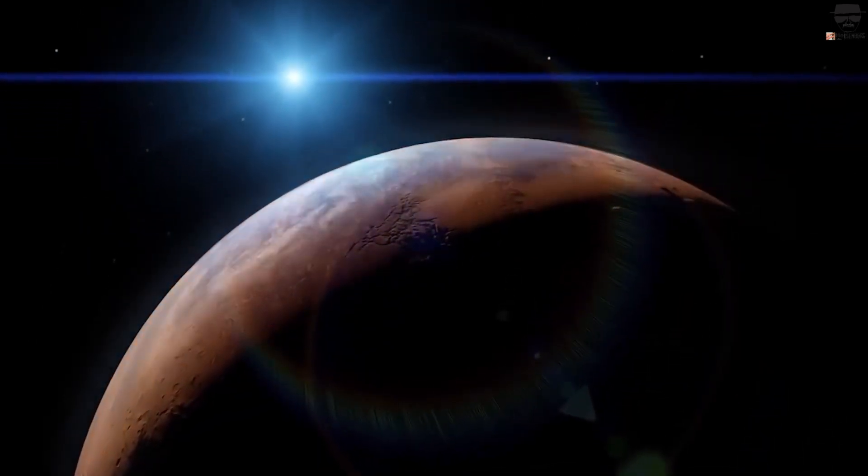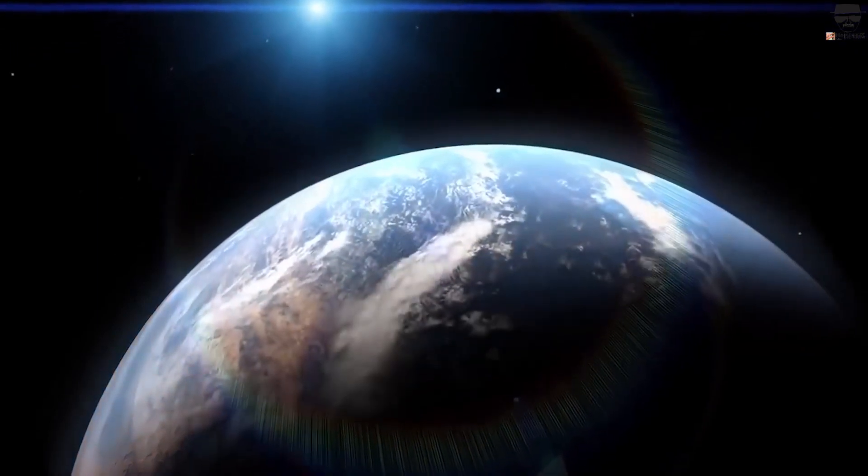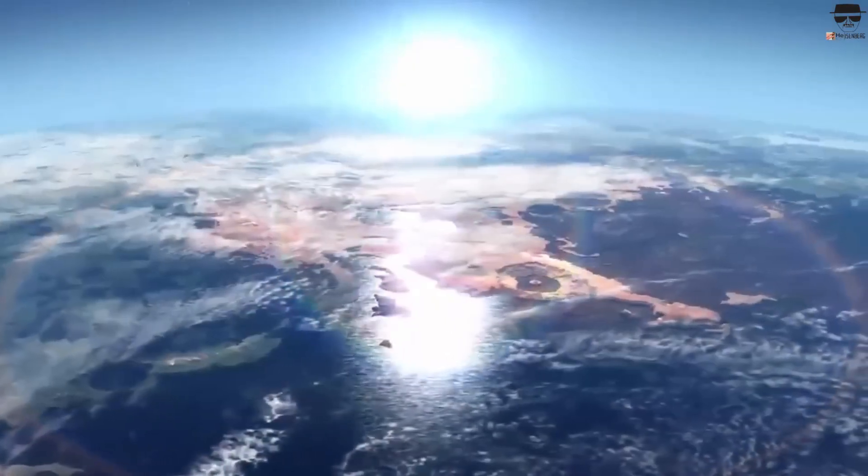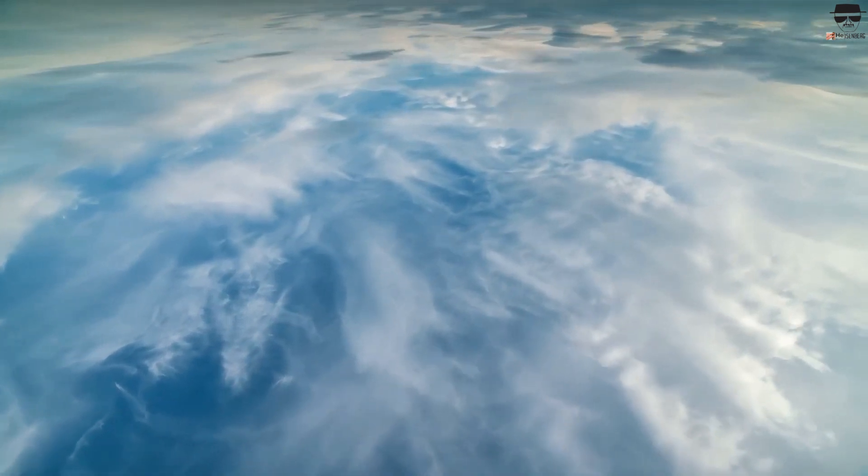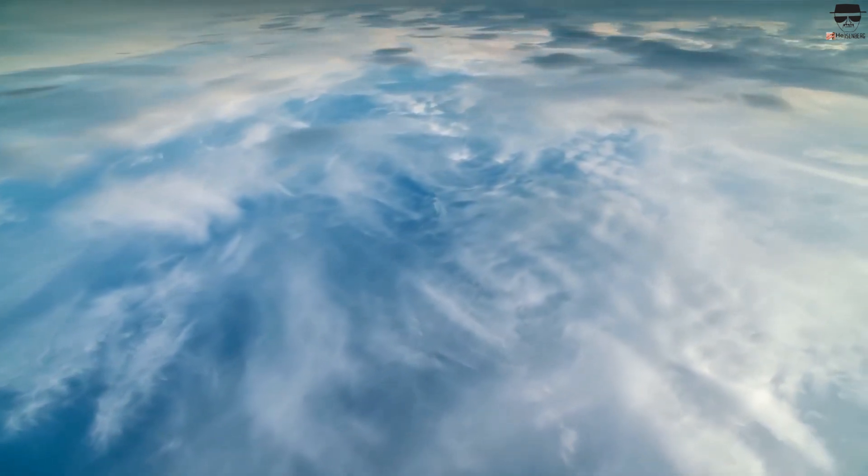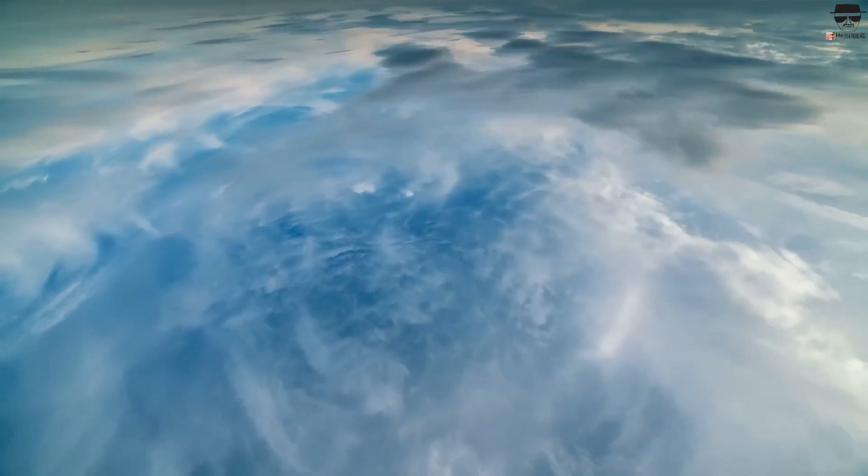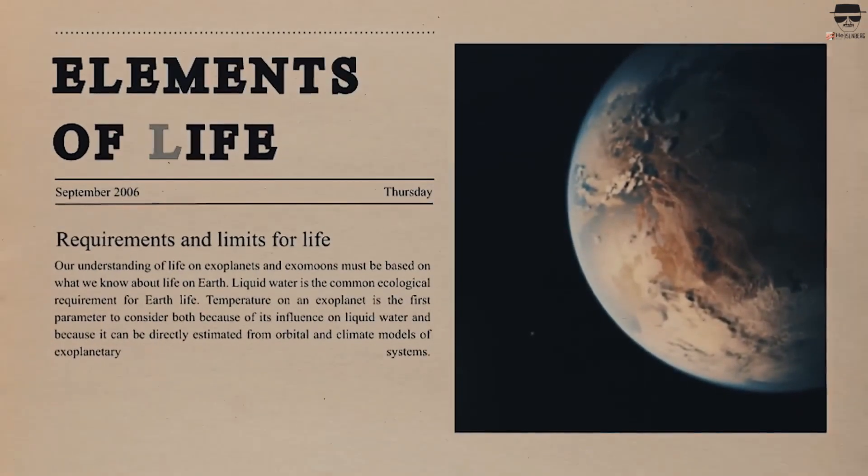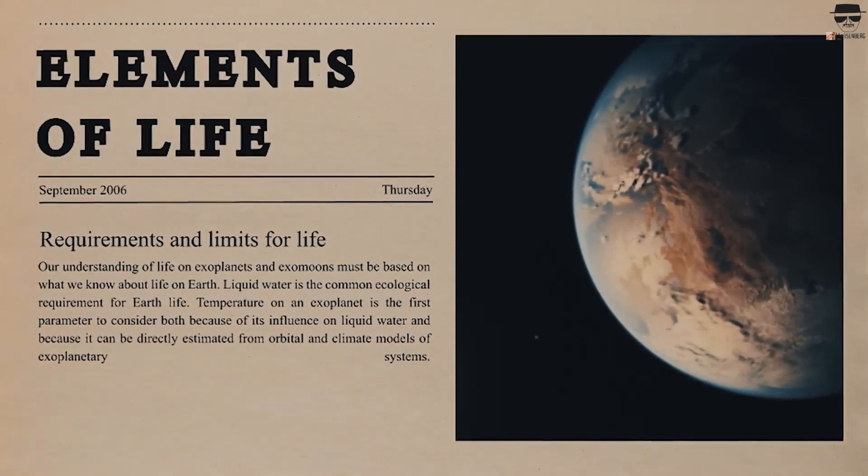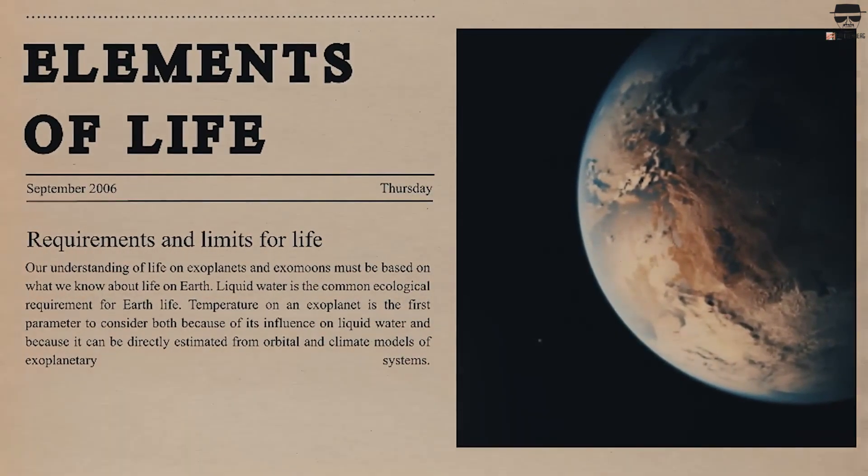If Earth-sized planets with atmospheres like our own were discovered, with the predominance of oxygen, nitrogen, and carbon dioxide, those planets would probably be able to sustain life. And it could be possible to spot technological life by checking for the presence of substances that don't occur naturally.